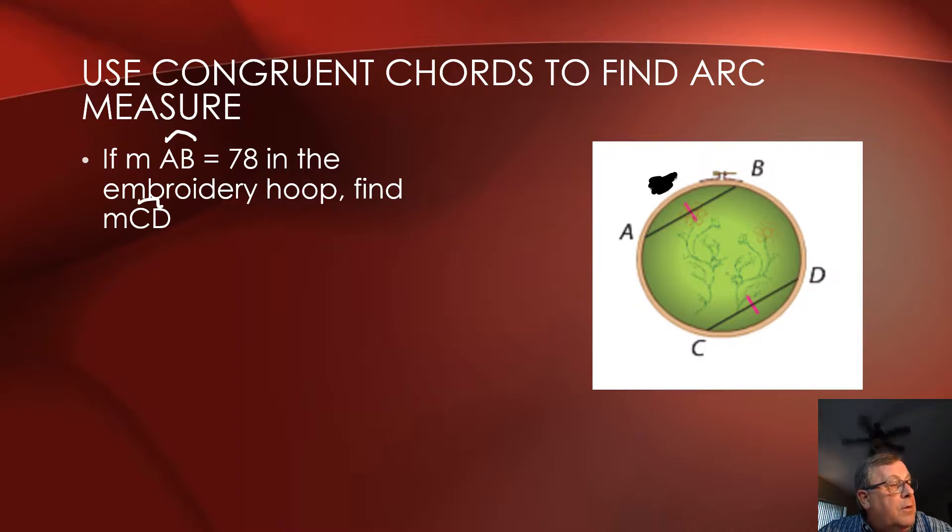We had a theorem, and the way this theorem reads, let me read this. It says that in the same circle, or congruent circles, two minor arcs are congruent if and only if their corresponding chords are congruent.